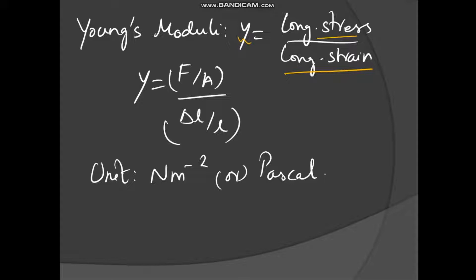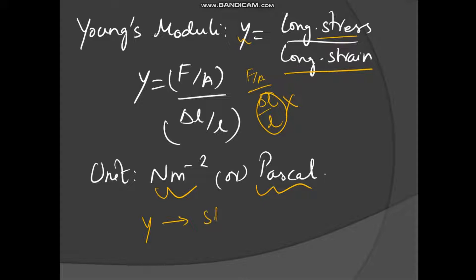The stress formula is equal to force by area, and the strain formula is change in the quantity divided by original quantity. Stress is force by area; strain is change in quantity by original quantity. Strain is a dimensionless and unitless quantity, and the unit of stress is N/m² or Pascal. Young's modulus has the same unit as that of stress and pressure.